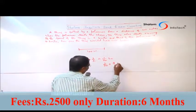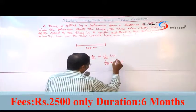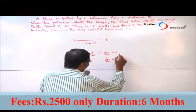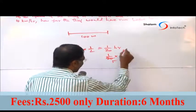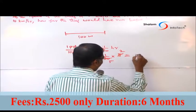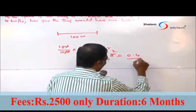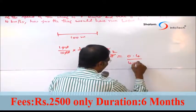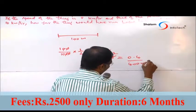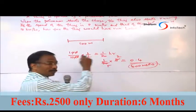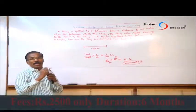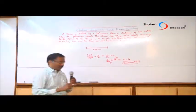If you calculate it: 8 multiplied by 1/20 gives 2 by 5, which equals 0.4 kilometers — that is, 400 meters. This is the answer. The relative speed concept is very useful; we can use it to find the time between them.